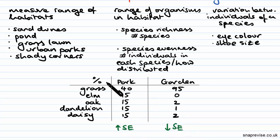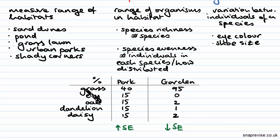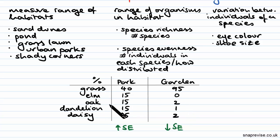So you can see that the species evenness in the park is far greater than that of the garden, and therefore the biodiversity is greater in the park than in the garden. Species richness is also greater for the park, because in the park there are five species, whereas in the garden there are no elms, so it's only four.